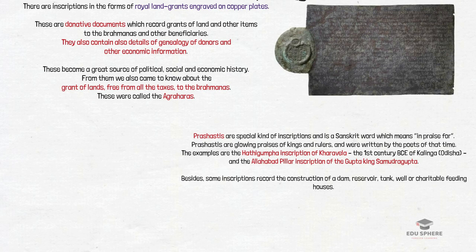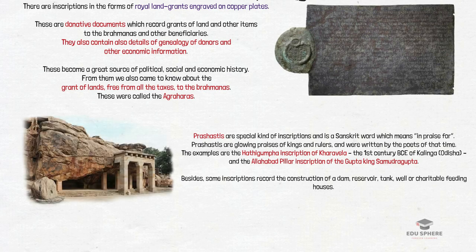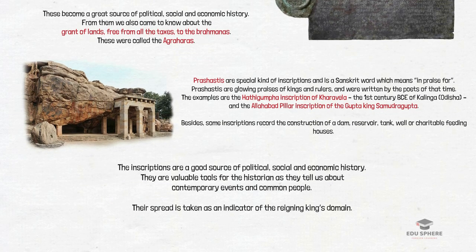Some inscriptions praise their patrons or kings — examples include the Hattigumpha inscription of Kharavela, the 1st century king of Kalinga, and the Allahabad pillar inscription of Gupta King Samudragupta. Besides these, some inscriptions record the construction of dams, reservoir tanks, wells or charitable feeding houses. From the above discussion, inscriptions are a good source of political, social and economic history — a valuable source for historians since they cannot be tampered with easily and tell us about contemporary events and common people. Their spread is taken as an indicator of a reigning king's domain.